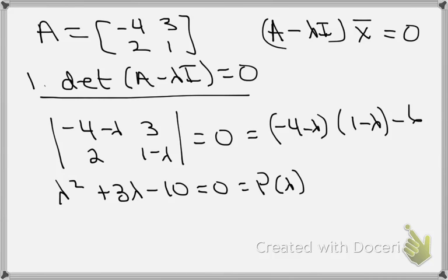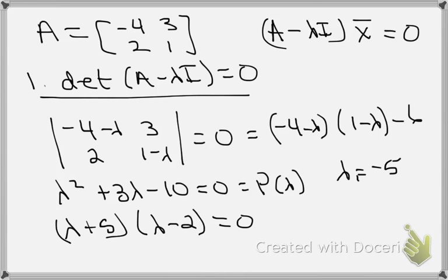We need to find the zeros of that polynomial. This factors to (λ + 5)(λ - 2). Setting that equal to 0 we get eigenvalues of λ₁ = -5 and λ₂ = 2.